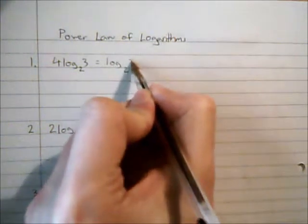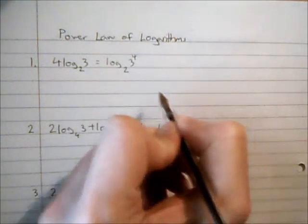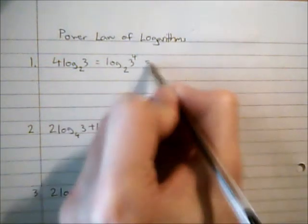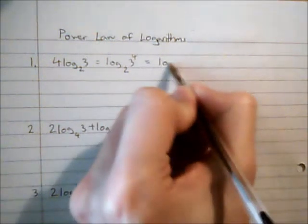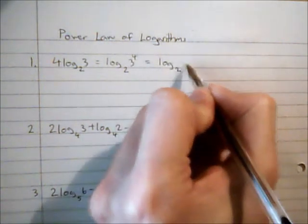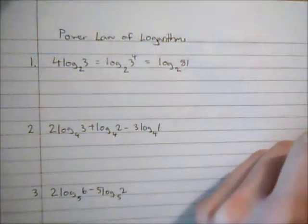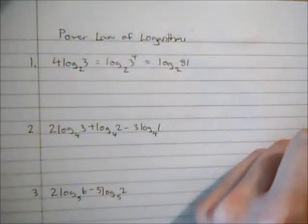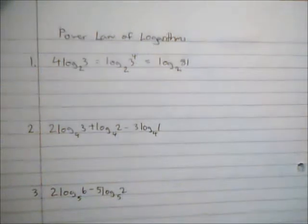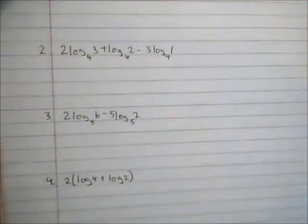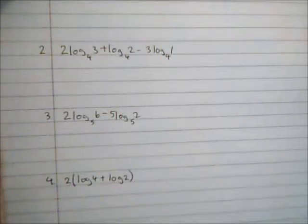We can rewrite this as log₂(3⁴). Then if I want to I can evaluate that. 3⁴ is 81, so I can rewrite that as a single log: log₂81. That's often going to be useful when we need to do mixtures of logarithm rules.